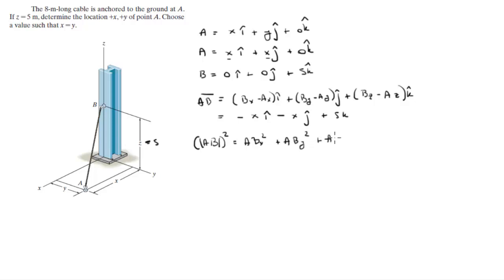We're given the magnitude as 8 in the problem, so 8 squared is 64. This equals X² + X² + 25. When you solve for X, you get ±4.42.